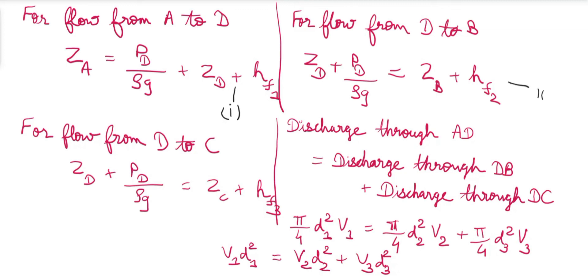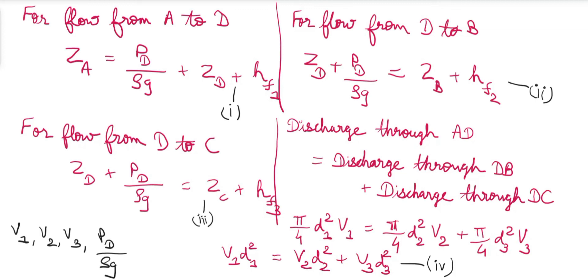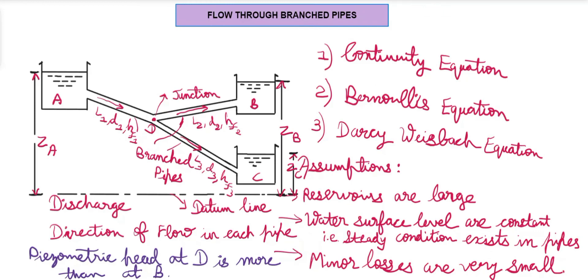This gives us four equations in total. We have four unknowns: V1, V2, V3, and Pd/ρg. By using these four equations, we will be able to calculate the four unknowns whenever required in an example. So, this is the case of flow through branched pipes. Thank you.